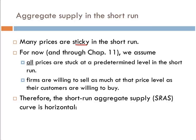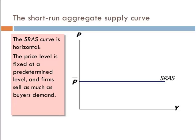Firms are willing to sell as much at that price as their customers are willing to buy. This is kind of a competitive-type assumption — we're assuming that markets behave in a way very similar to a purely competitive environment. Therefore, the short run aggregate supply curve is horizontal. We plot it out and it's horizontal. Why? Because prices are fixed, not output, in the short run.